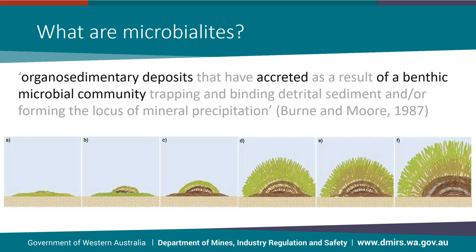This simplified graphic shows the means by which a microbialite forms. We have a community of microbes that congregate and a process of either trapping and binding of sediment will occur or direct precipitation in place will begin. Often as the structure accretes, the microbes will keep pace by migrating to the outer or living edge, and the process continues until a resulting structure, a microbialite, is formed.